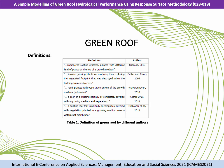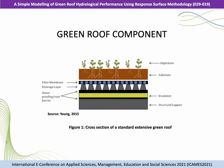Table 1 shows a cross section of a standard extensive green roof used in this study. As you can see, on the top is the vegetation, followed by the substrate, filter membrane, drainage layers, waterproofing, insulation, and the structural support.